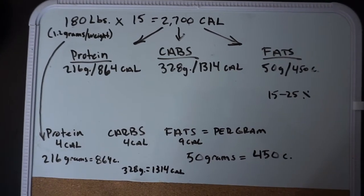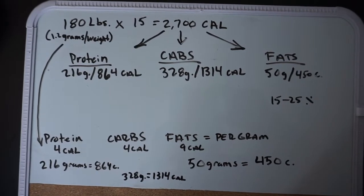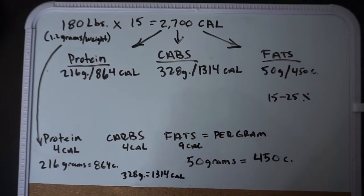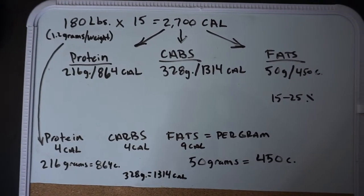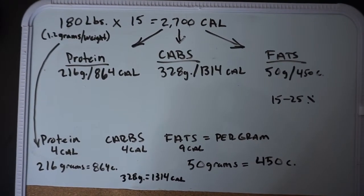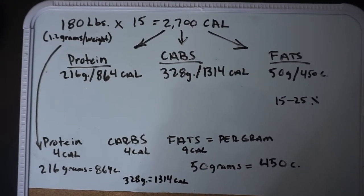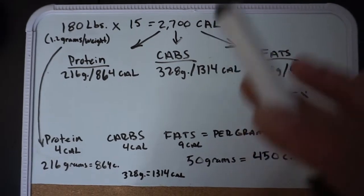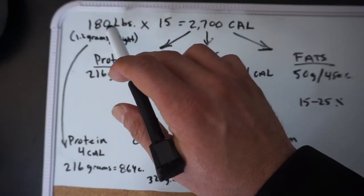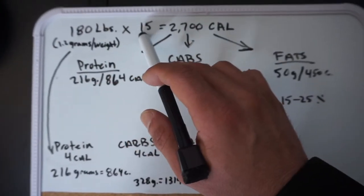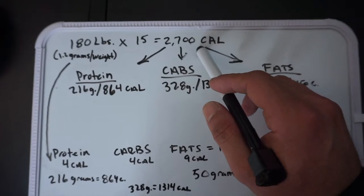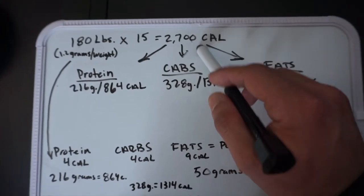I made this little diagram to help you get a better understanding of how to figure out your maintenance calories. Once you figure that out, you'll be able to decide whether you want to cut or bulk. I'm going to use myself as an example — I'm using 180 pounds as my body weight. I'm going to multiply that by 15, which gives me 2,700 calories total intake. So it literally takes 2,700 calories to maintain 180 pounds.